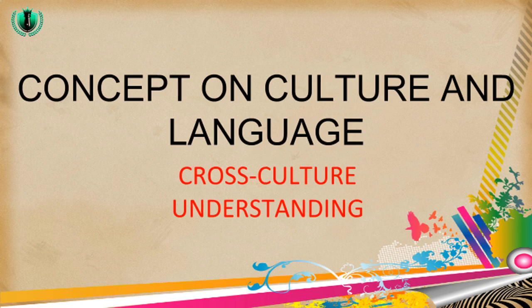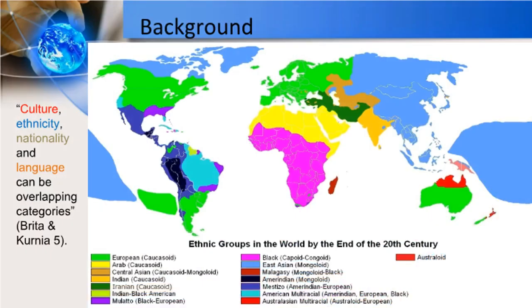This concept is important for students who would learn a wider concept on culture. As you can see, the world has 17 ethnic groups by the end of the 20th century, and the distribution of each ethnic group is unique. In theory, Britta and Kurnia stated that culture, ethnicity, nationality, and language can be overlapping categories.